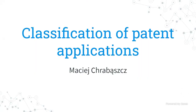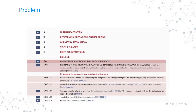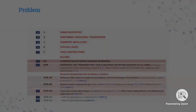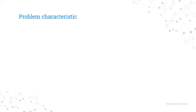Welcome to the text planning session. Our first presenter is Maciej, who will talk about classification of patent applications. Our team participated in a GovTech competition whose goal was to predict the class of a patent given the patent application. The classes are structured as a tree, which I'll explain in a moment.